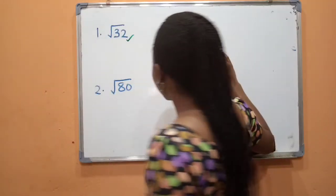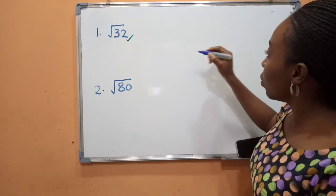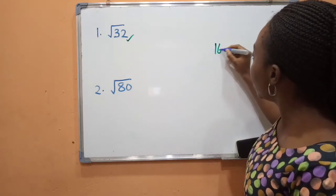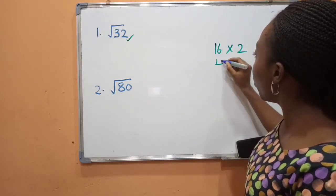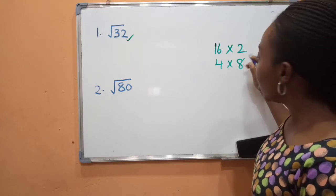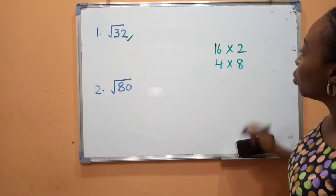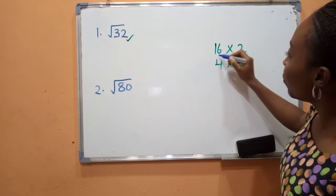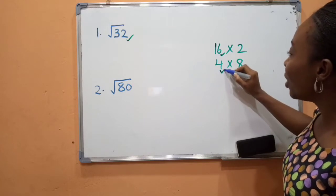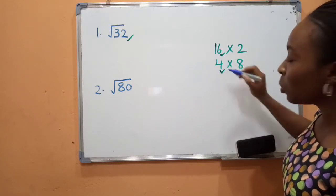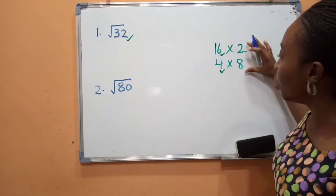Let's list out the possible factors of 32. We have 16 times 2, and we have 4 times 8. Now if you take a look at this example, you're going to notice something. We have 16, which is a perfect square, and 4 is a perfect square too. We simply need only one set — we just need one of these, and we can go with two.